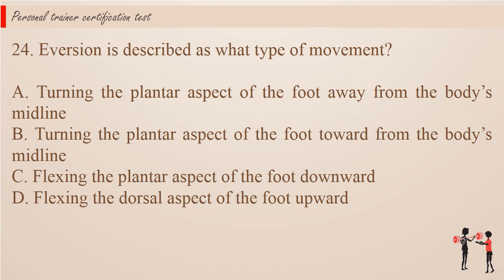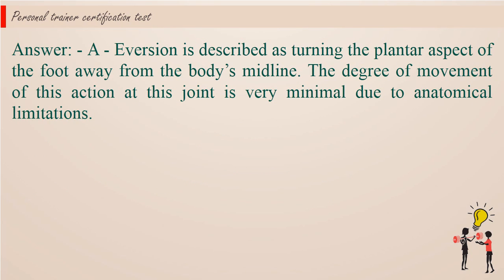Question 24. Eversion is described as what type of movement? a. Turning the plantar aspect of the foot away from the body's midline. b. Turning the plantar aspect of the foot toward the body's midline. c. Flexing the plantar aspect of the foot downward. d. Flexing the dorsal aspect of the foot upward. Answer: a. Eversion is described as turning the plantar aspect of the foot away from the body's midline. The degree of movement of this action at this joint is very minimal due to anatomical limitations.